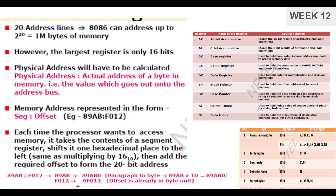Here we see how to calculate the address. A segment address and an offset address are given. For example, segment address is 89AB and offset address is F012. We multiply the segment address by 10 (hex), giving 89AB0, then add the offset address F012 to get the physical address. So: segment address × 10 plus offset address equals the physical memory address of the 8086. This calculation is very important.